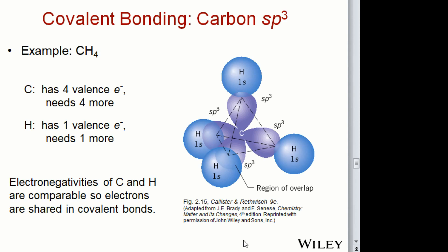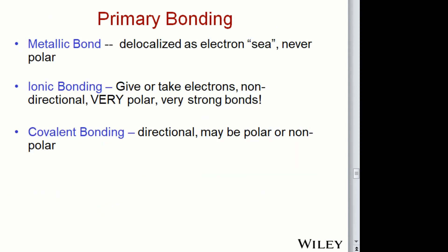I haven't spoken yet about metallic bonding. It's one of the simplest types of bonding arrangements because you have a delocalization of electrons — what we call a sea of electrons. There's never any polarity; the electrons just float around everywhere. All of the elements in the transition metal area are typically metallic bonding, and electron negativities are all very similar in the transition metal area.